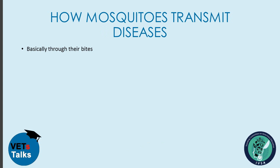How do mosquitoes transmit diseases? Mosquitoes transmit diseases through their bites — they bite individuals and transmit the virus, causing disease to manifest.